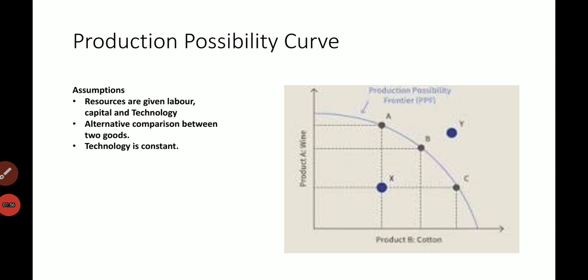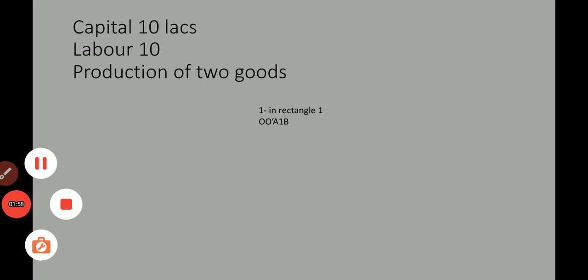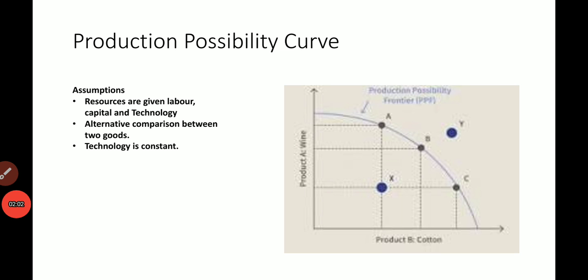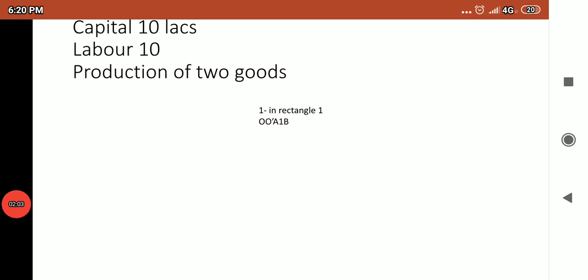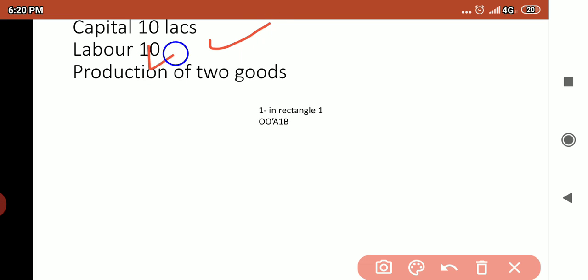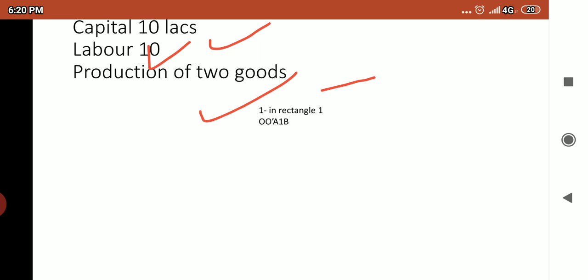The producer has 10 lakhs in the form of capital, and the labor quantity is 10. The production involves two goods — wine and cotton. Now let's look at this curve again.